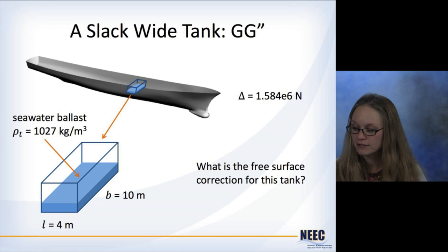So here's an example. We have a wide tank going across the ship placed here. Inside the tank is some seawater ballast, so the density of the fluid is just seawater. I'm going to use 1027 kilograms per meters cubed here. The length of the tank is 4 meters and the beam is 10 meters. The weight of the ship is shown here. So we're asking, what's the free surface correction for this tank?